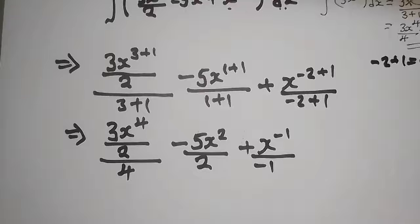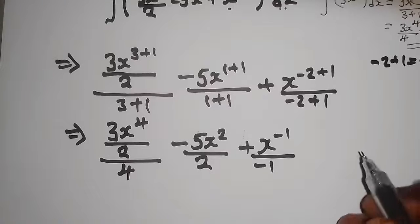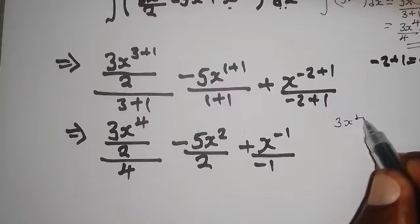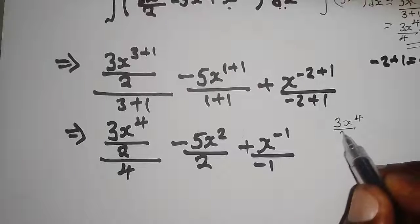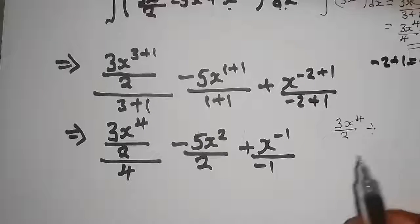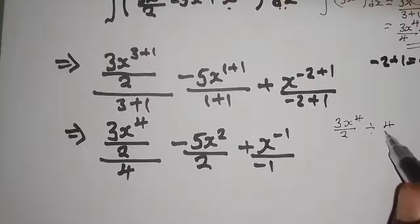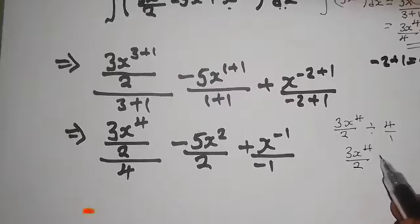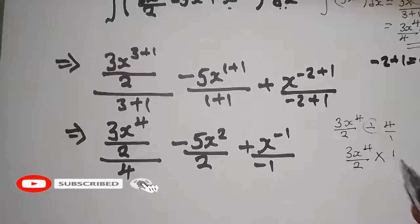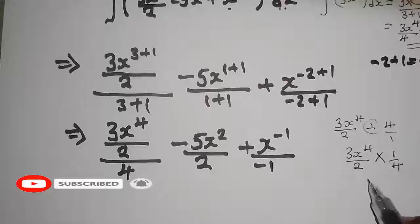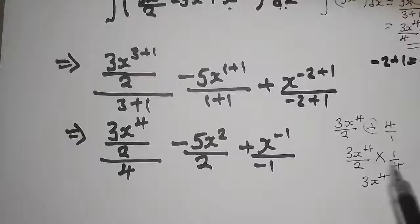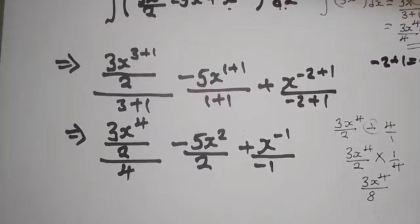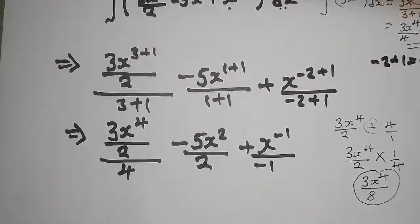To simplify the fractional part, we use algebraic fraction simplification. We have 3x to the power 4 over 2, divided by 4. Dividing by 4 is the same as multiplying by 1 over 4. So it becomes 3x to the power 4 times 1, over 2 times 4, which is 3x to the power 4 over 8.